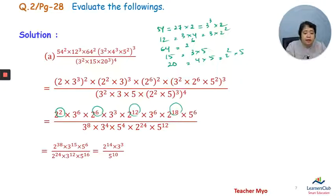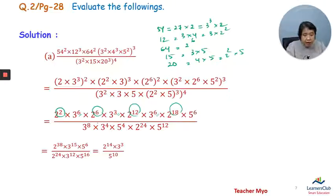Now 3 to the power 6, 3 to the power 9, 9 and 16, 3 to the power 15, 5 to the power 6, 3 to the power 8, 3 to the power 4, 3 to the power 12, 2 to the power 24, 5 to the power 4, 12, 16. This is the same thing.